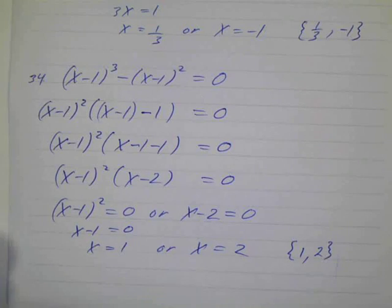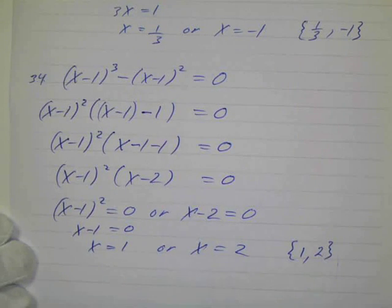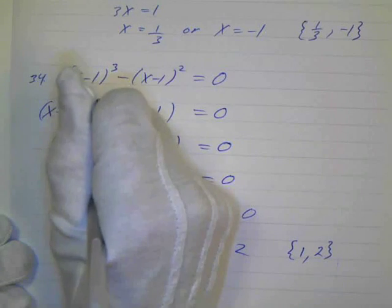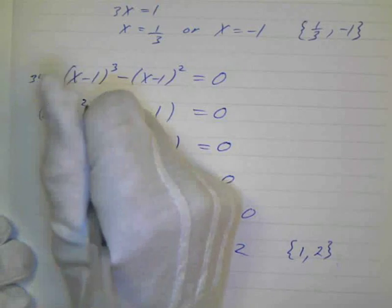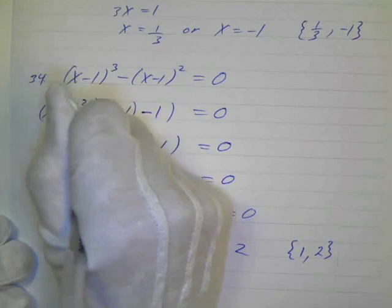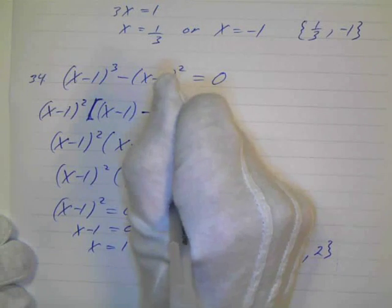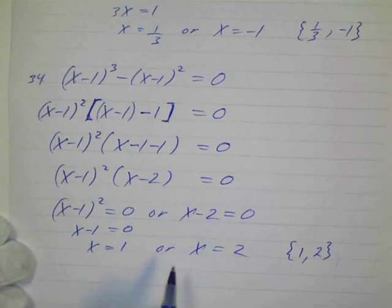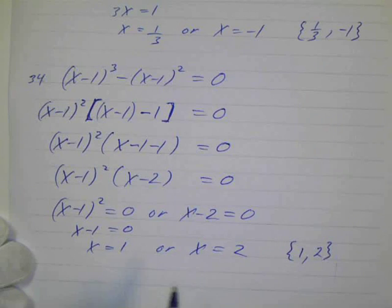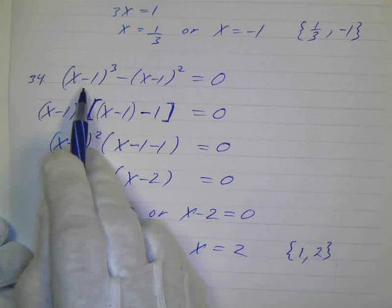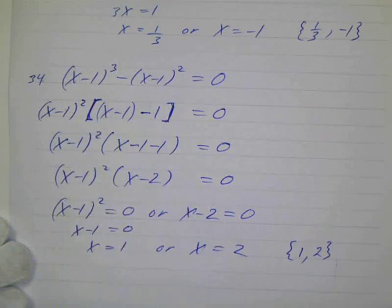So we factored out this common factor, and sometimes we use brackets when we have parentheses and brackets, so you can see it a little bit better. So we're factoring x minus 1 squared out of both these terms.